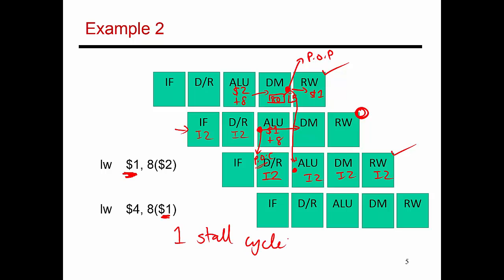Intuitively, in our earlier example an add instruction was producing a result at the end of the ALU stage. Now the load produces its value one cycle later, so consumers need to be delayed by at least one more cycle. That's the intuitive reason for the one stall cycle — a load takes longer to produce its result.